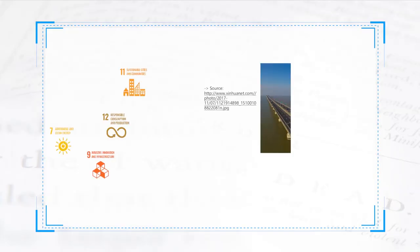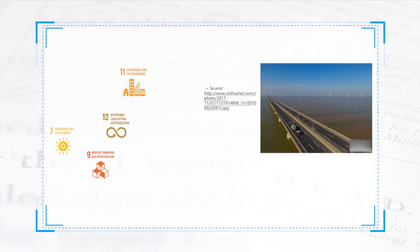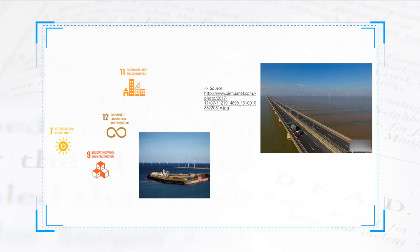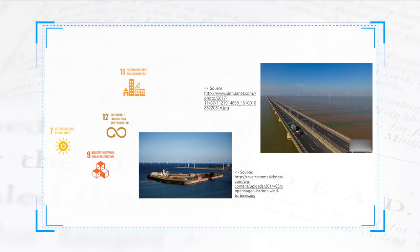On the right side, we see a picture of East Sea Ground Bridge, very close to Lingang. Along the bridge, we can see a series of wind turbines. On the left bottom, we see a picture of wind turbines in Copenhagen, Denmark. As you may find, efforts are being made worldwide to decarbonize the energy supply systems.